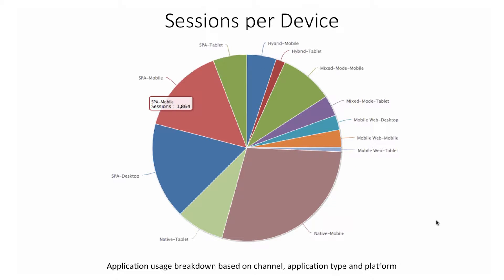We also have a chart which lets you view the application usage breakdown by channel — like desktop, mobile, or tablet — or by application type like mixed mode, hybrid, native, or SPA, and by platform. This lets you view across the different types of channel, app, and platform what is being used and how much, displayed on a pie chart.